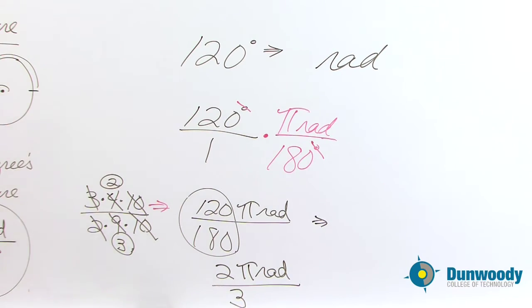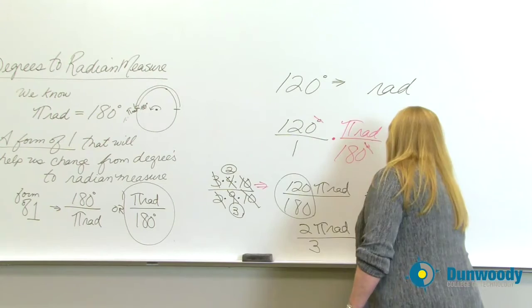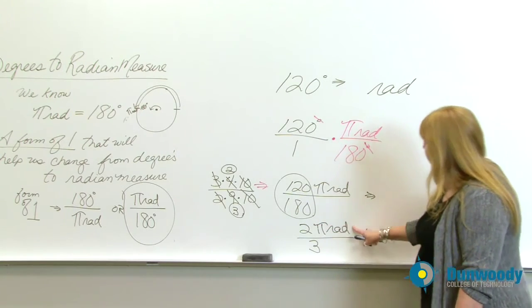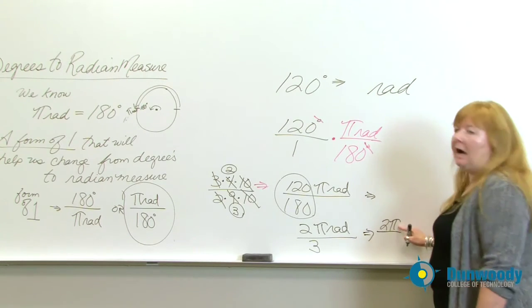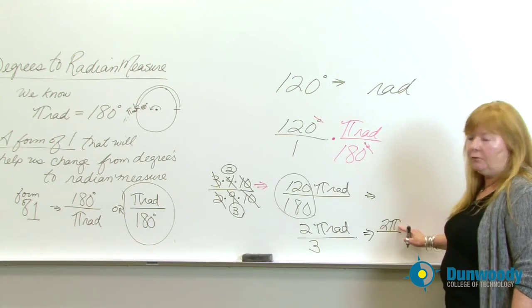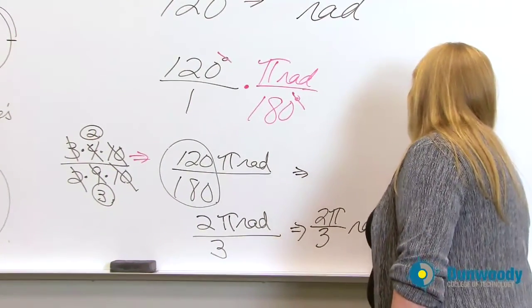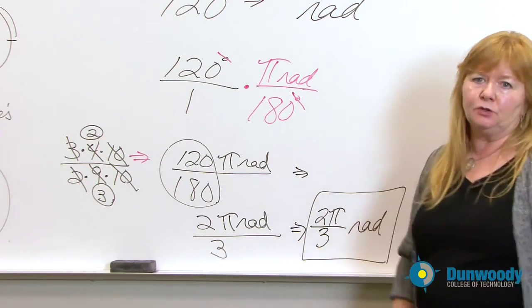And that is indeed your answer, but let's write it in a more effective way that follows talking in radian measure. We put the 2 times the pi, because remember, pi is just a number, but we leave it in pi form. It's over 3. And we pull the radian off to the side to be a little more formal.